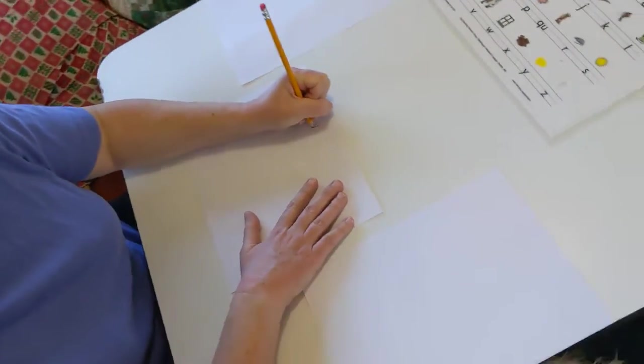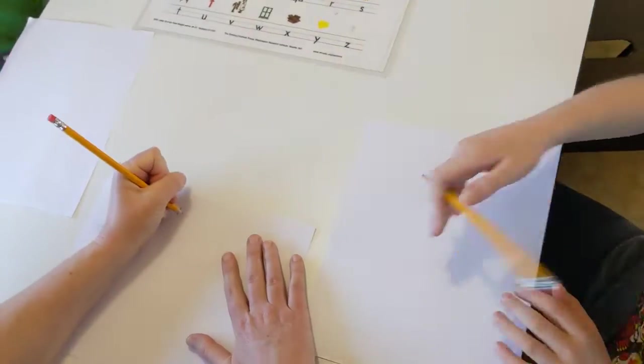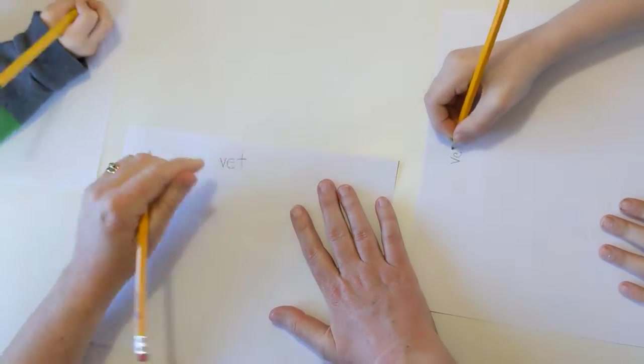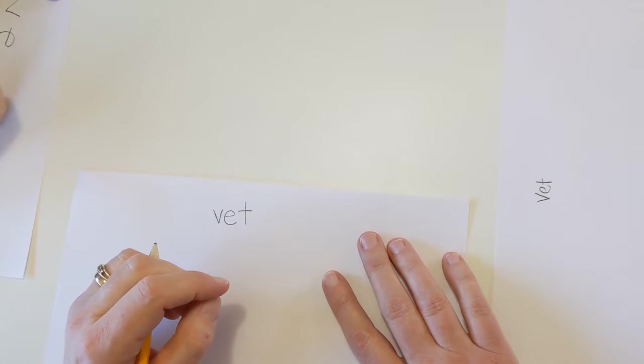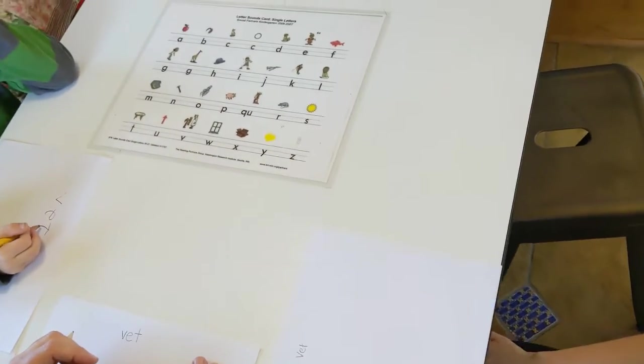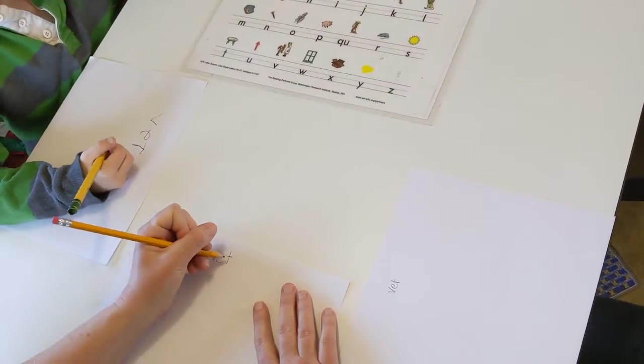We're going to start with our letter V. I'm going to have us write the word vet. Write your V. Eh. T. V. Eh. T. What's the word, Tevye? Vet. Vet. What are we going to change? The T. We're going to change the T and make it what?